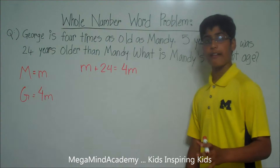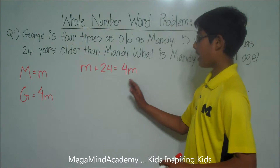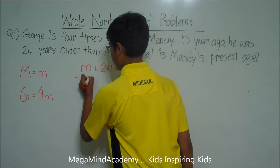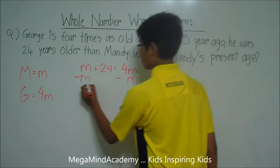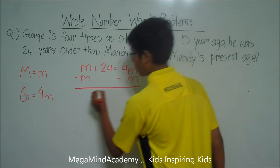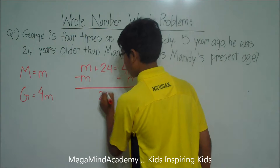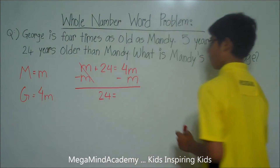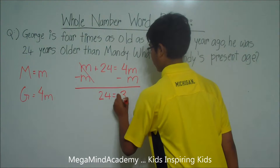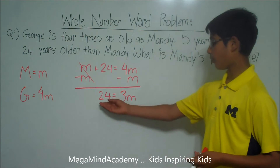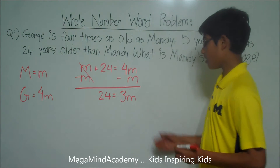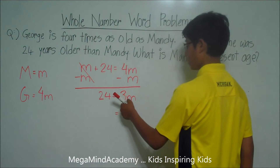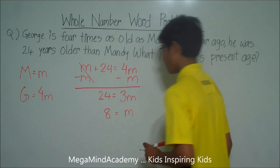Let's put the variables on one side and the numbers on the other side. To do this, we have to subtract M from both sides of this equation. We get 24 — because M minus M cancels out — is equal to 4M minus M, which is equal to 3M. So this means that 24 is equal to 3M, and M is equal to 24 divided by 3, which equals 8.